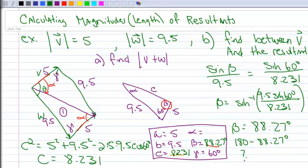Does that look like it's going to be an obtuse angle? No. It's not going to be an obtuse angle. So I don't have to do that in this particular case. So I do know that beta is 88.27. That answers part B of this example. And that's the end of this example.